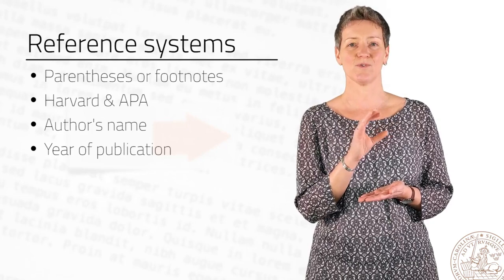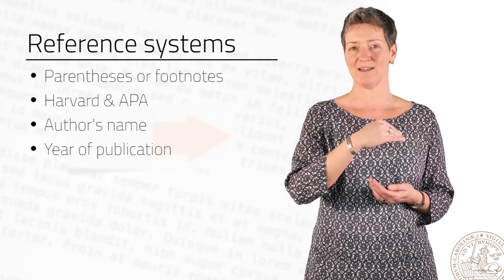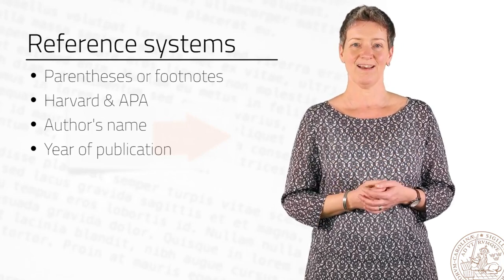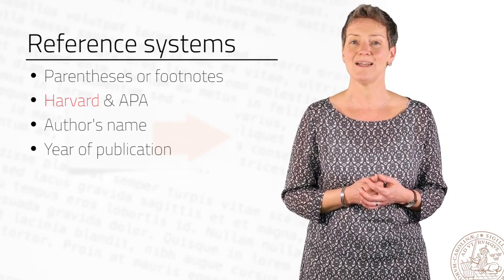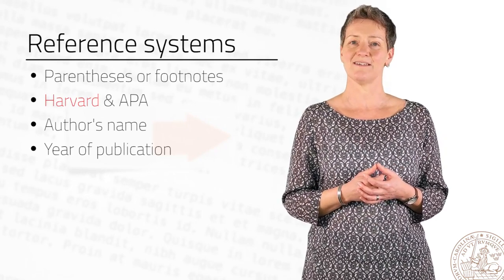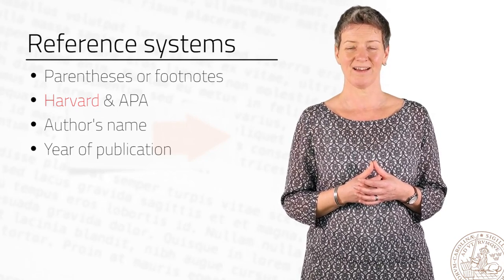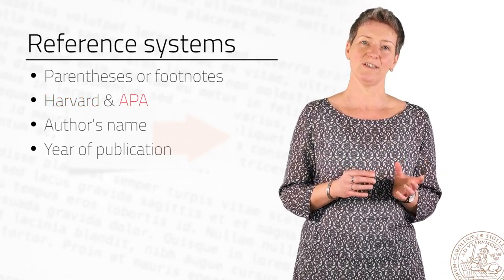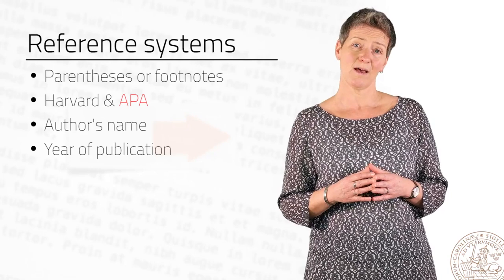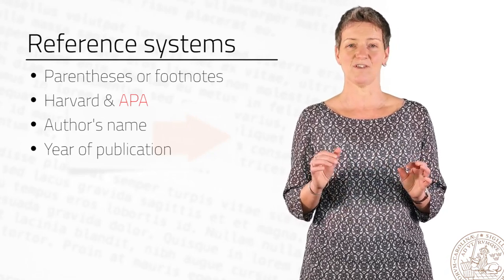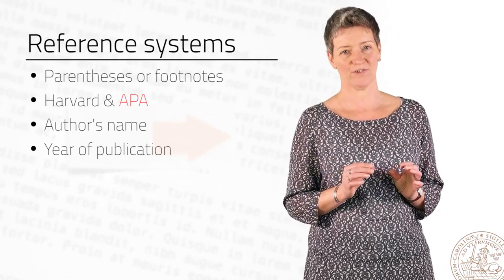Your reader then knows that there is a description of this particular reference in your reference list, which is a list with all the sources that were used, usually in the end of a text. The Harvard system was developed mainly by biologists, but it has later on become big within humanities and social sciences. APA was originally developed by psychologists, but is also widely used within social, behavioral and health sciences.